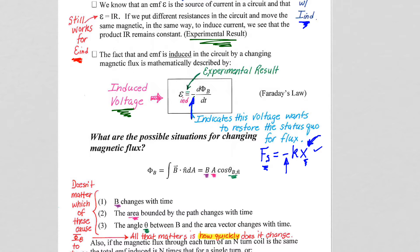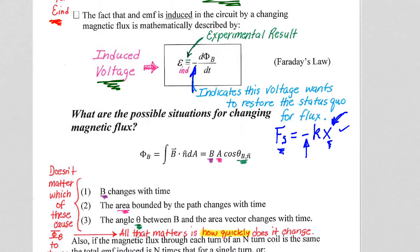So what are the possible situations for changing magnetic flux? Well, flux is flux, whether it's magnetic flux or electric flux. It's B dot n hat dA for magnetic flux. It was E dot n hat dA for electric flux.